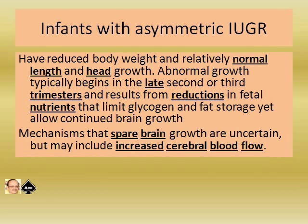Infants with asymmetric IUGR have reduced body weight with relatively normal length and head growth. Abnormal growth typically begins in the late second or third trimester, resulting from reduction in fetal nutrients that limit glycogen and fat storage yet allow continuous brain growth — something like a brain-sparing effect. The mechanisms that spare brain growth are uncertain but may include increased cerebral blood flow.